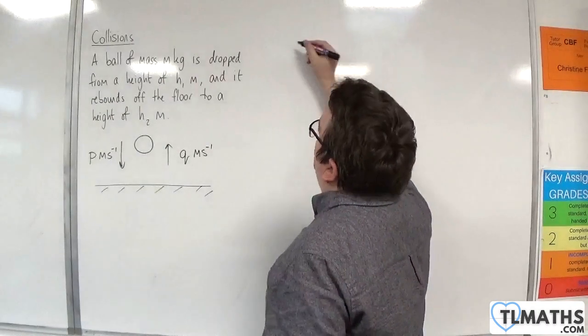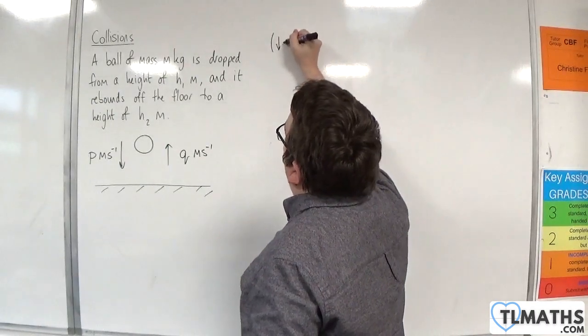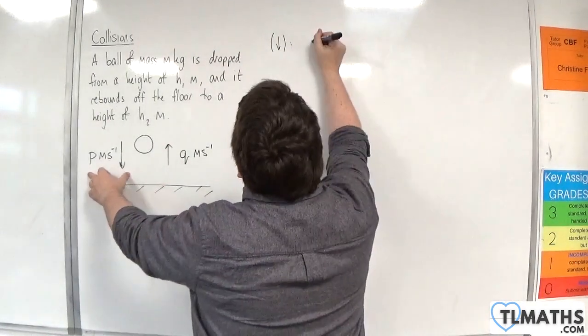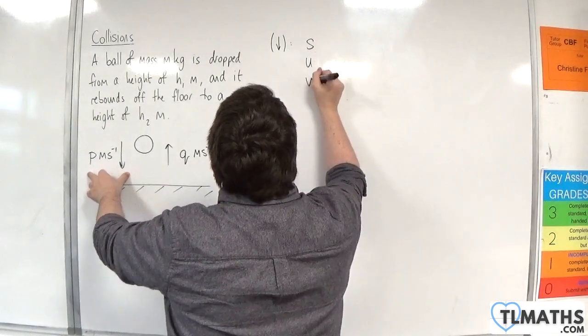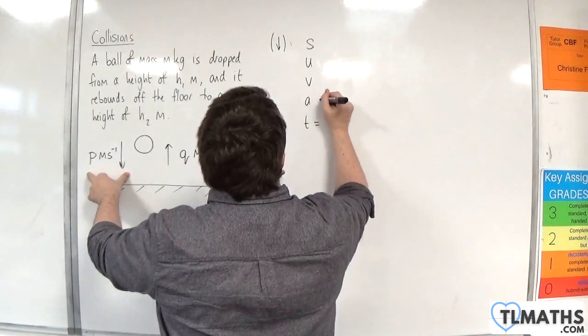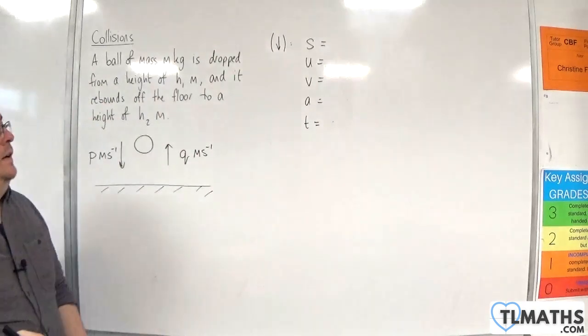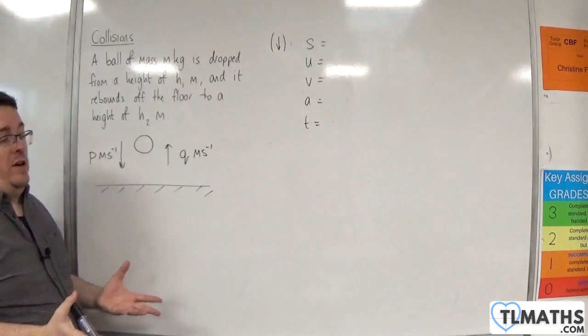So let's take a look at the downward motion first. So taking downwards is positive. So the before. So we're going to use the constant acceleration formulae. Because the acceleration is constant. Because it's going to be accelerating due to gravity.